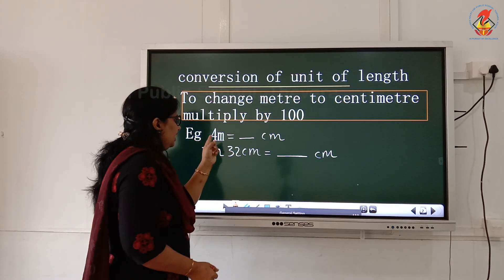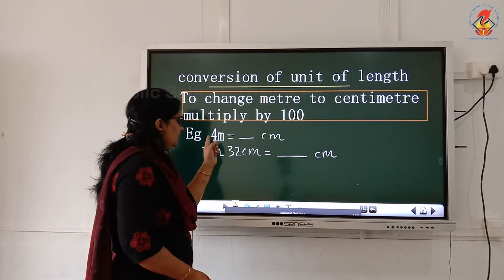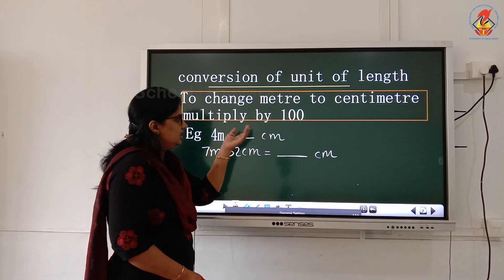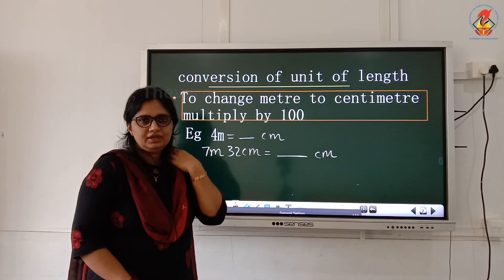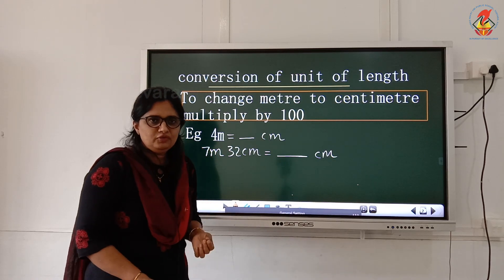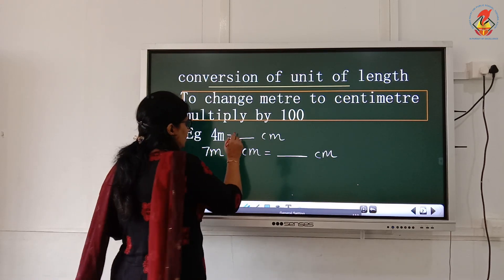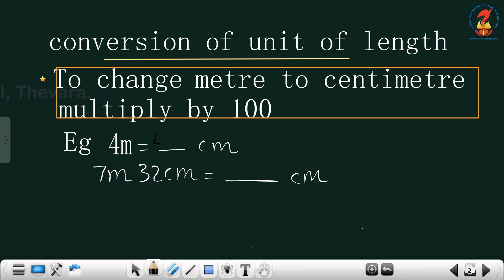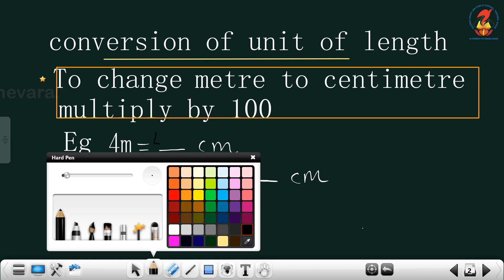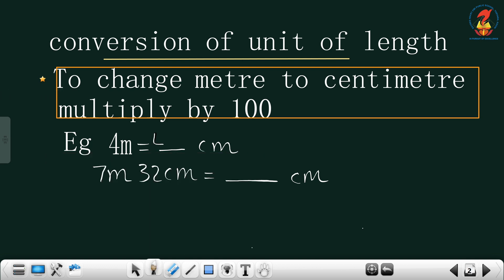For example, 4 meter equals how much centimeter, children? 4 into 100 only. So 4 into 100 centimeter. That is 400 centimeter only.